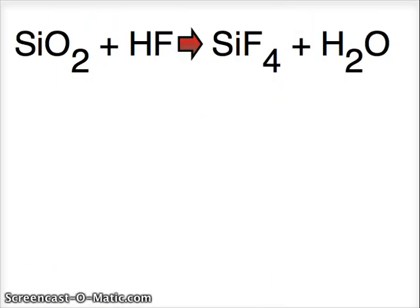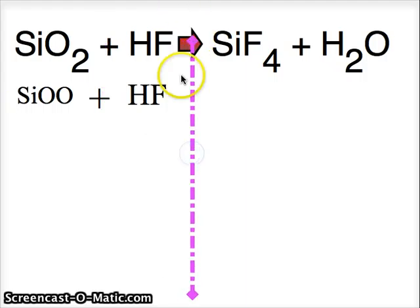If you're given the problem SiO2 plus HF yields SiF4 plus H2O, the first thing you do is write everything out as individual atoms grouped together in blocks. SiOO plus HF makes, dividing the entire section of the paper, SiFFFF plus HHO.